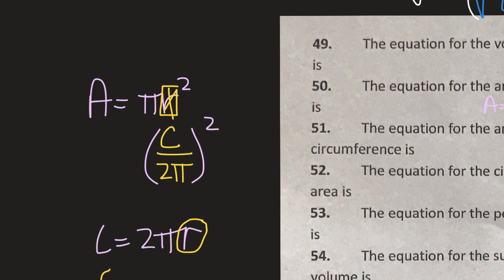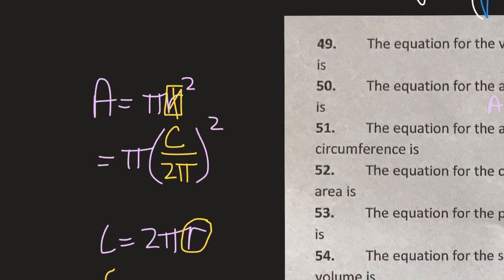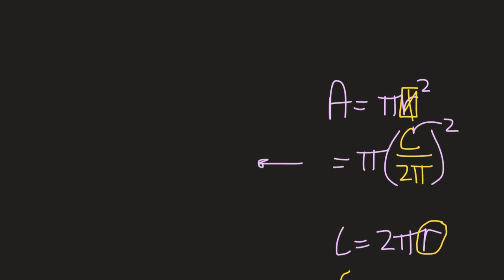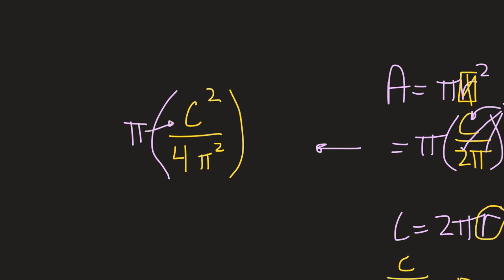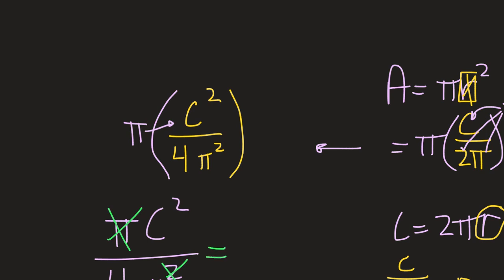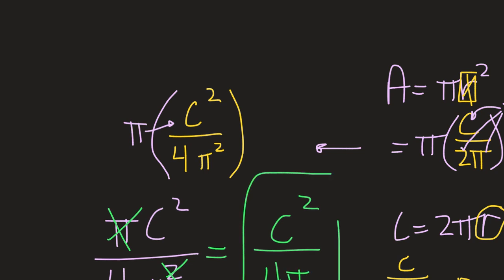And I'm going to square that, because area says square the radius then multiply by pi. I have to square circumference, square the 2, and square the pi. So I have pi on the outside and C squared over 4 pi squared. Pi is getting squared — yes it is, that's a number, it's OK. So now I multiply pi times C squared over 4 pi squared. We have a pi on top and bottom, so one pi divides out. Your final answer is C squared over 4 pi. That's the area of a circle as a function of its circumference, not as a function of its radius.